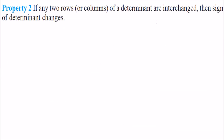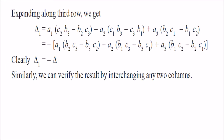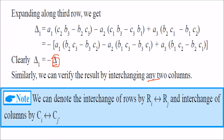Property 2: if any two rows of a determinant are interchanged, then the sign of the determinant changes. So if we take a determinant and interchange, say, the third row with the first row, the displaced row moves to the third row position. When we solve it, we see it is equal to minus the original determinant. We can also verify this by changing any two columns. The interchange of rows is denoted R_i ↔ R_j, or for columns C_i ↔ C_j.